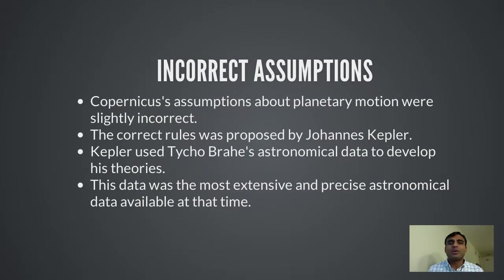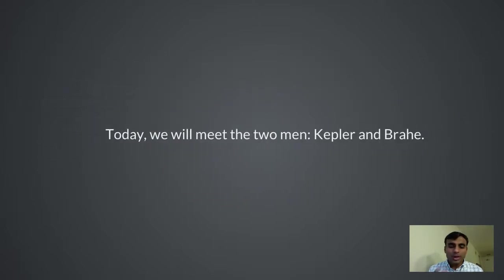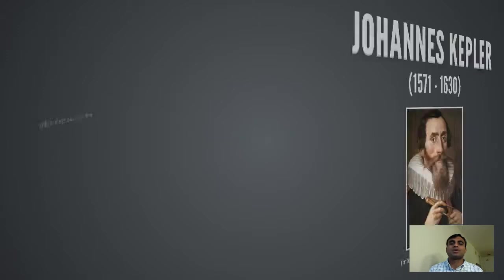However, these assumptions were later found to be incorrect by Kepler, who we will talk about today. Kepler used the astronomical data of Tycho Brahe, another great astronomer of the time whose data was the most extensive and most precise available — and this was before the telescope had even been invented.